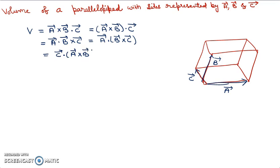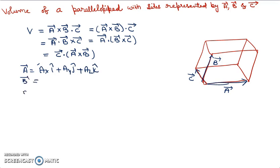All these results, when they come out positive, represent the volume of the parallelepiped. Now if we want to solve this, how do we do it? If vector a is given as ax·i cap + ay·j cap + az·k cap, and similarly vectors b and c are given, then to find the volume you write ax, ay, az,